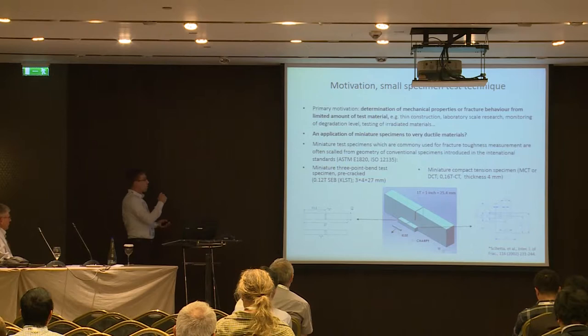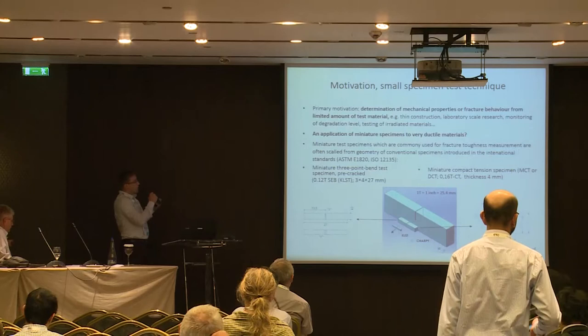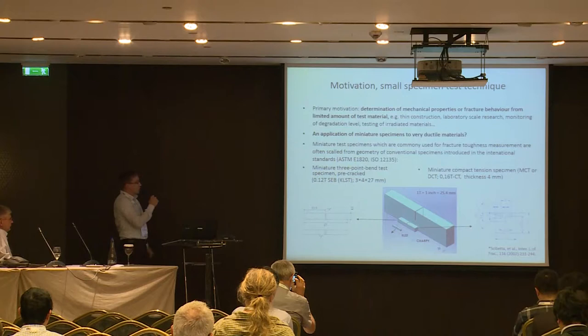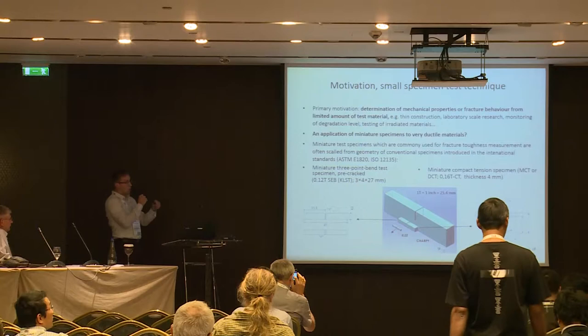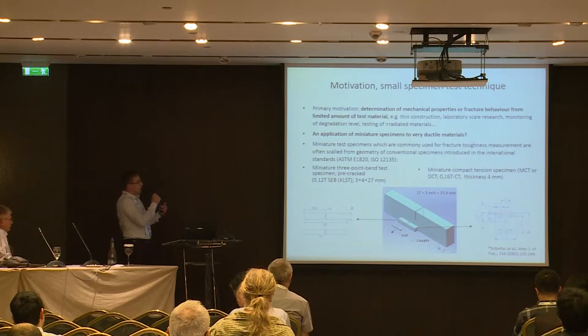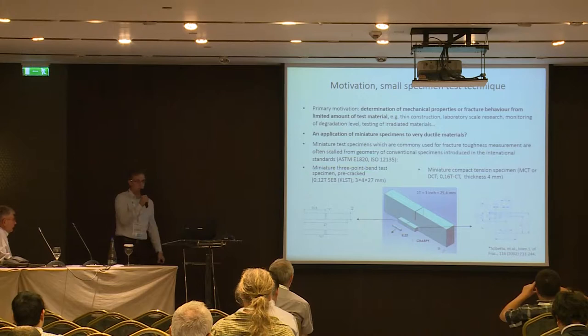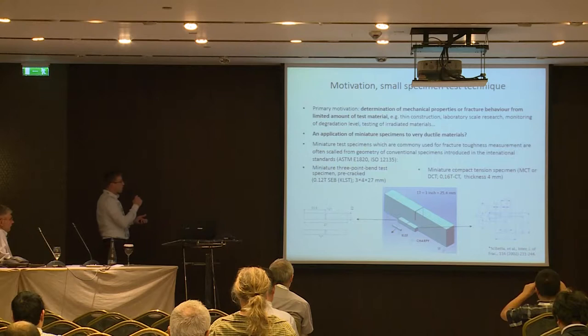If there is aging or a catastrophic failure, you can more easily determine the cause of the damage. Also, one application is testing of irradiated materials, which naturally exist in small amounts to avoid difficulty with handling irradiated material, since it is very easy for base disposal. Another question we are addressing with Jacques is the application of miniature specimens to very ductile materials.